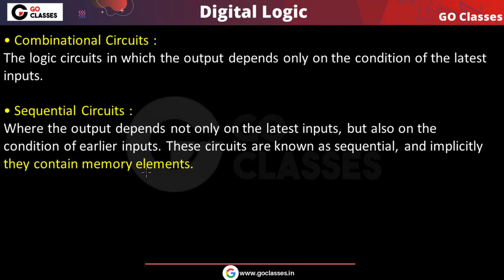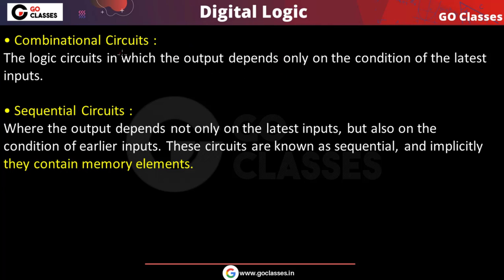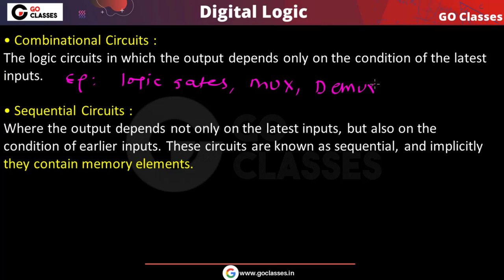You already know what a sequential circuit is. A combinational circuit is a circuit in which the output depends only on the current input. Examples of combinational circuits include logic gates — AND gate, OR gate, NAND gate — as well as multiplexer, demultiplexer, encoder, decoder, full adder, half adder, carry look-ahead adder, and ripple carry adder.